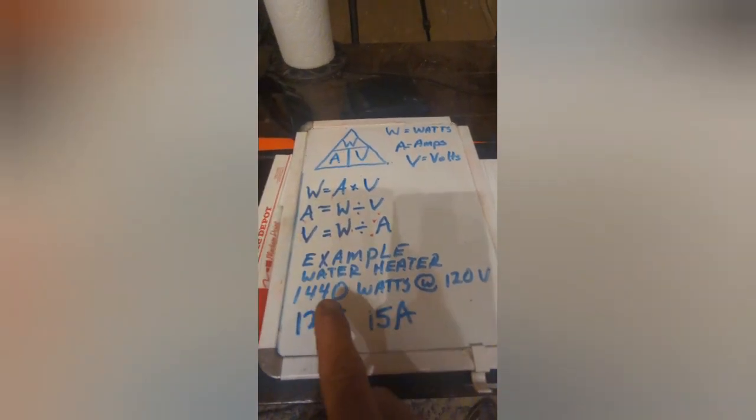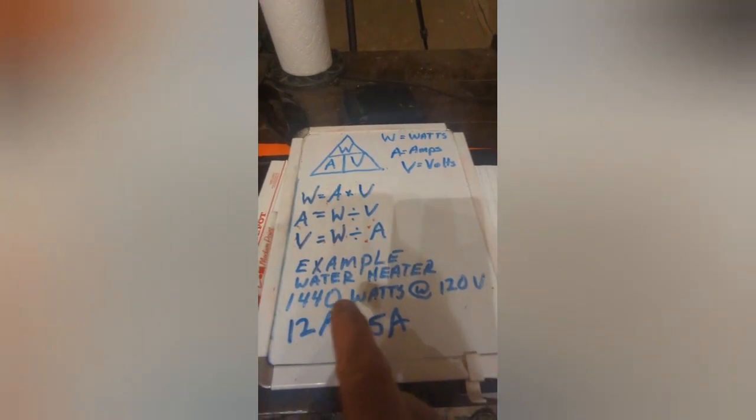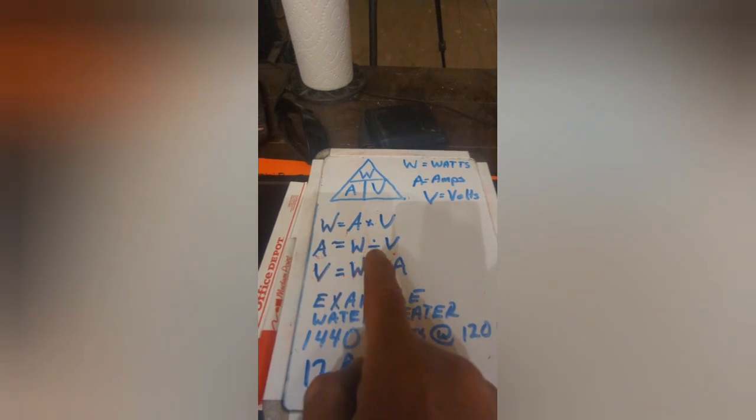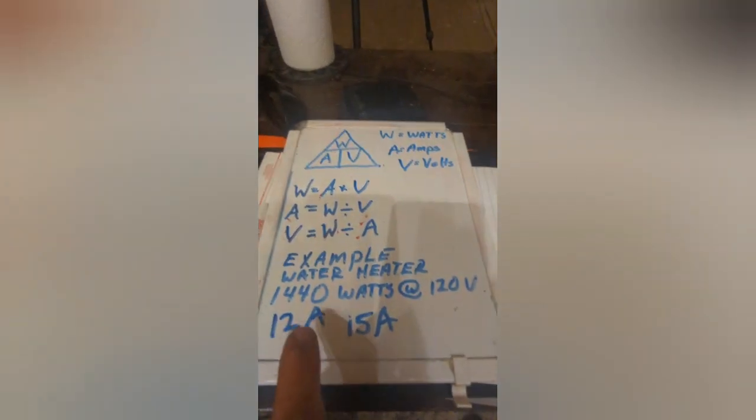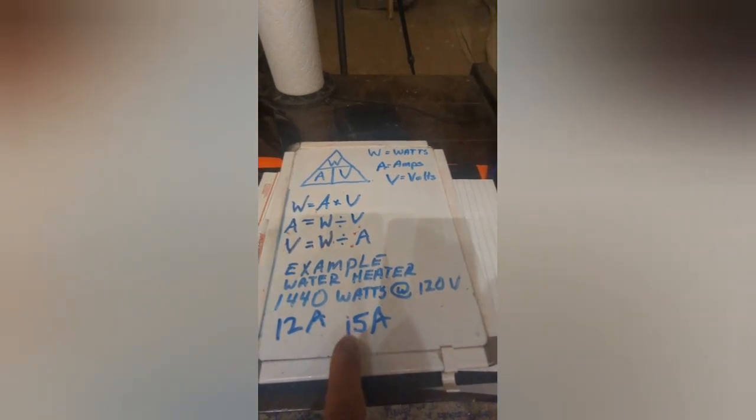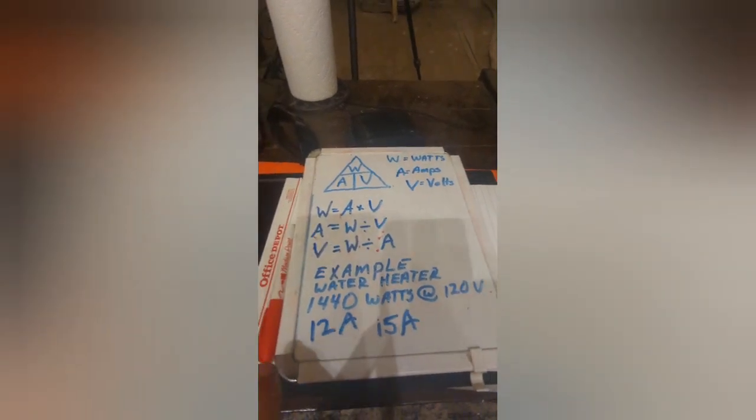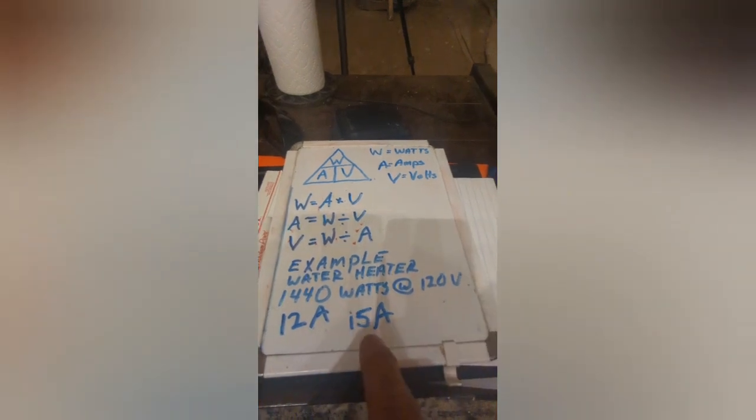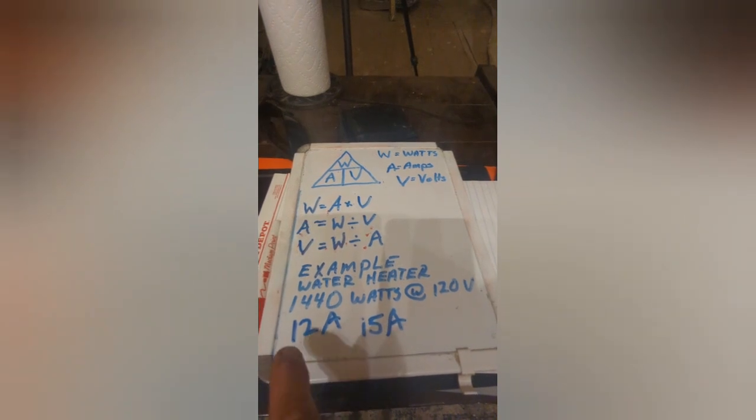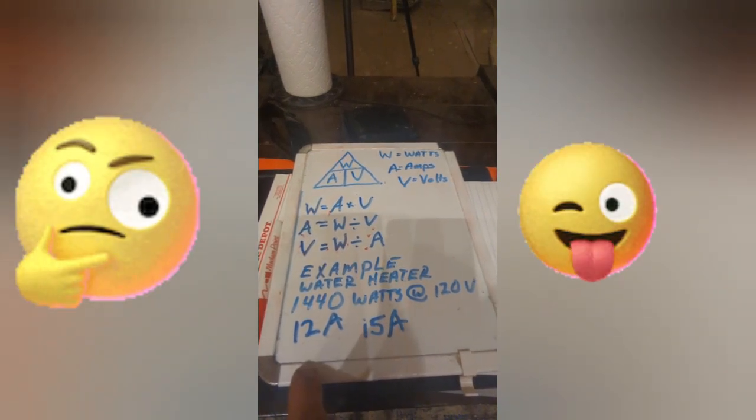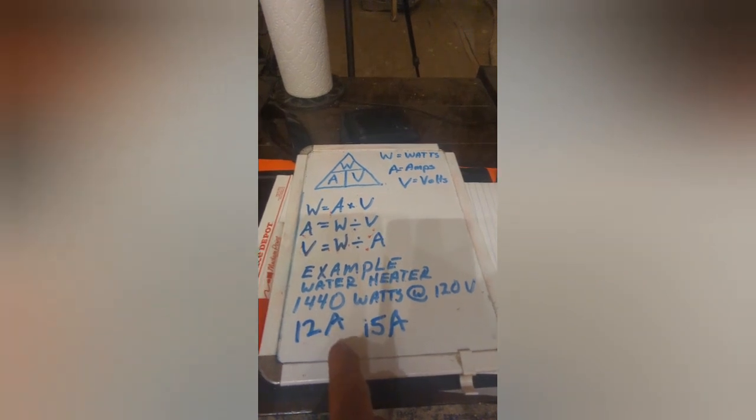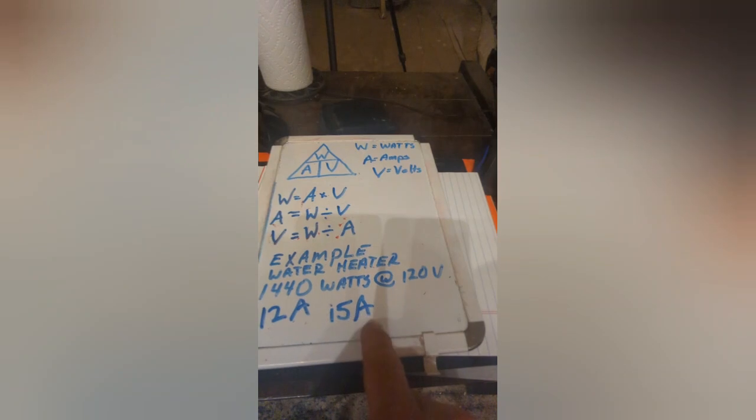So all I got to do is punch this into my formula here and say, okay, I need to know amperage. So I look here, I need wattage divided by volts. That gives me 12 amps. Now in order to size my breaker, we go back to that 80% rule. Now what I'm going to do here is I'm going to divide this by 0.80 and that's going to give me 15 amps.